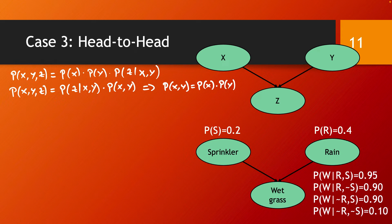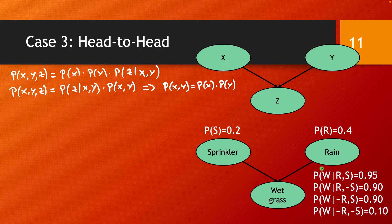Here is an example of such a head-to-head connection. We have a model with a variable for the grass being wet, with two dependencies: the sprinkler, which causes the grass to get wet, and the rain variable, which also induces the grass to get wet. We set the prior probabilities for the sprinkler being on and for having a rainy day. The conditional probability table has four cases because we must consider all combinations of R and S being true or false.